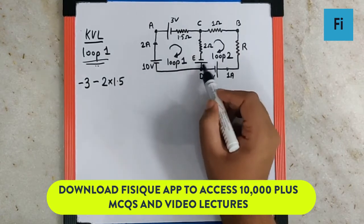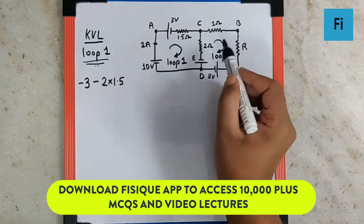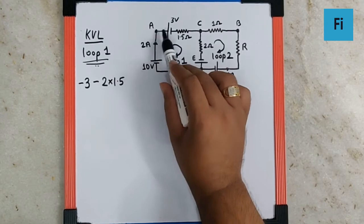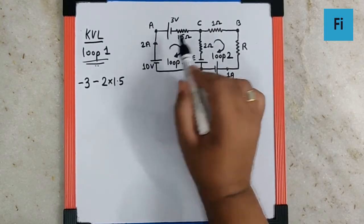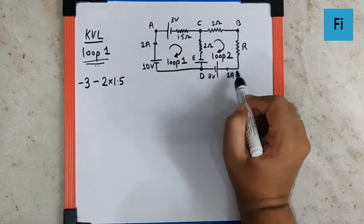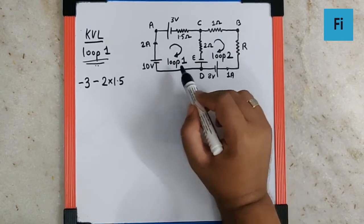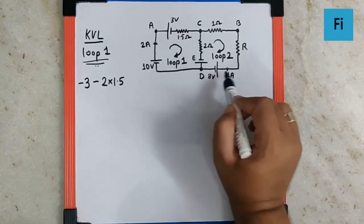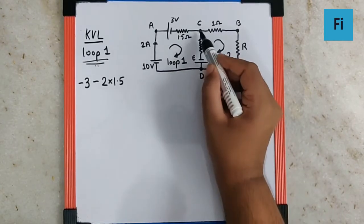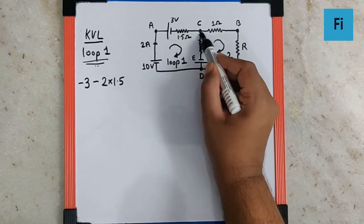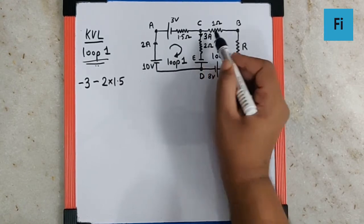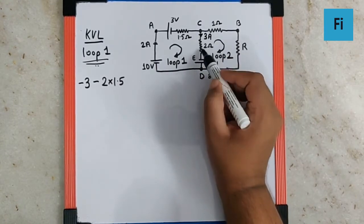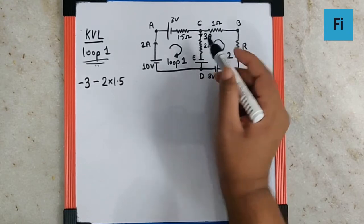Moving from C to D, we come across a resistance and a battery. The 2 ampere current flows clockwise and the 1 ampere current flows anti-clockwise; at point C they add up by KCL to give 3 ampere. Since we travel from C to D in the direction of current, the voltage drop is minus IR.